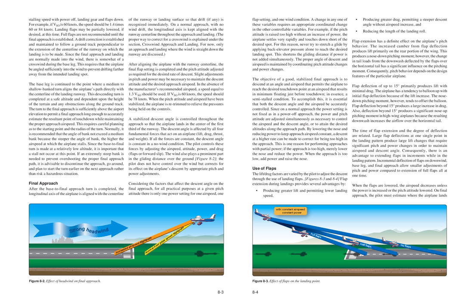The proper angle of descent and airspeed is maintained by coordinating pitch attitude changes and power changes. The objective of a good, stabilized final approach is to descend at an angle and airspeed that permits the airplane to reach the desired point at an airspeed that results in minimum floating just before touchdown — in essence, a semi-stalled condition. It is essential that both the descent angle and the airspeed be accurately controlled.